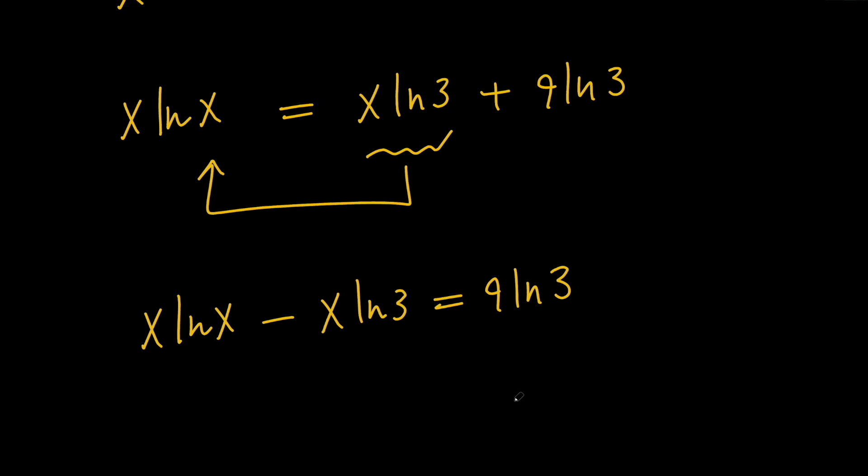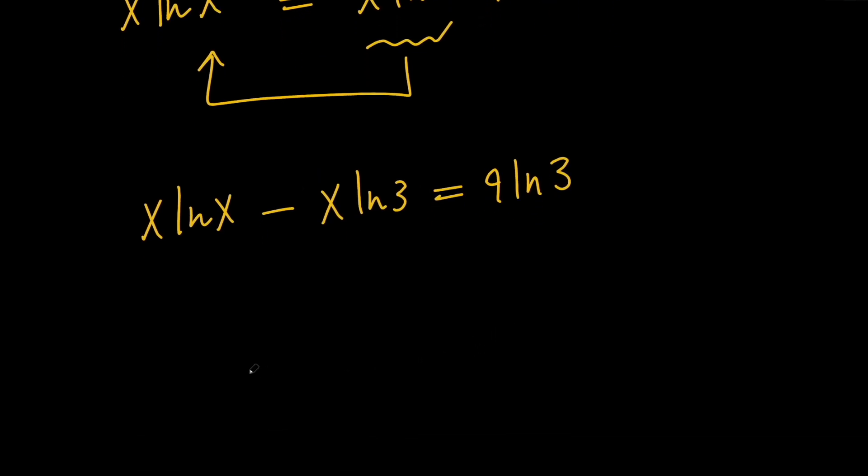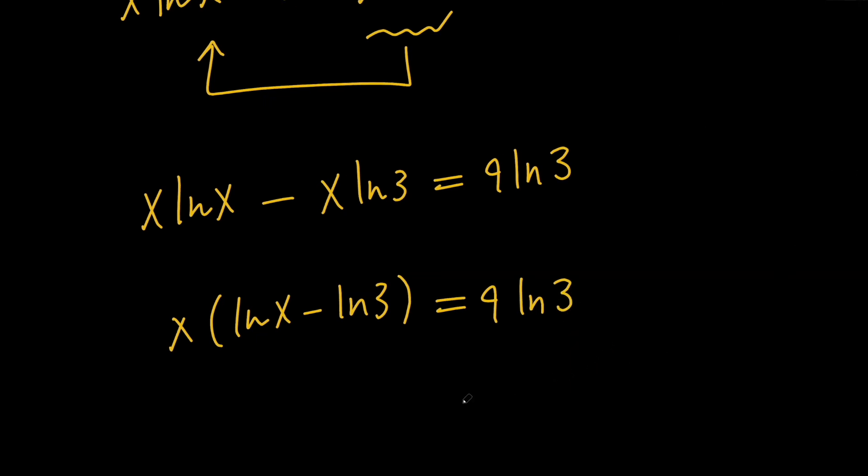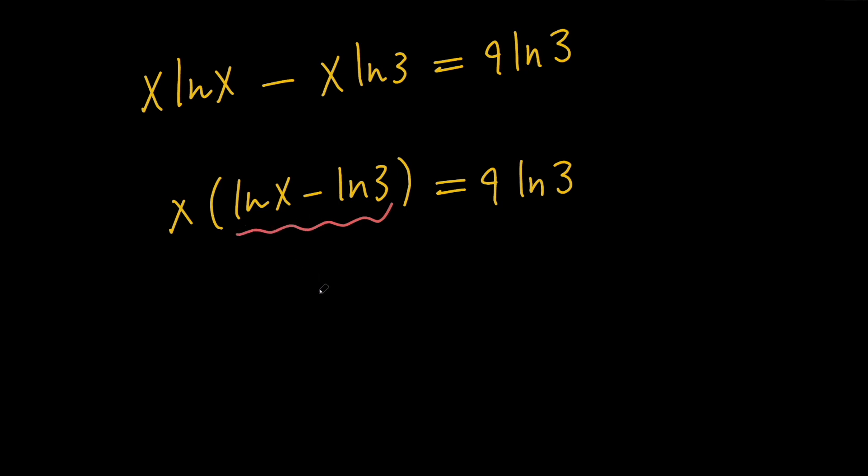Then, if we factor the x's on the left hand side, we're going to have x times the quantity lnx minus ln 3 equals 9 times ln 3. Next, notice that we have a difference of 2 logs here, so we can turn this into 1 log and write it as ln of x over 3.